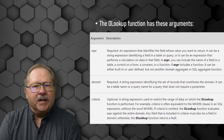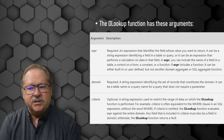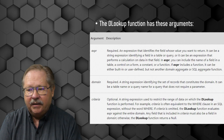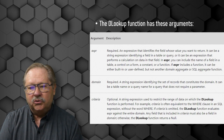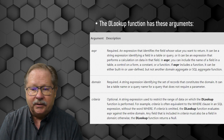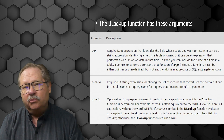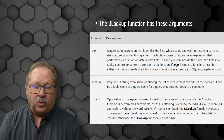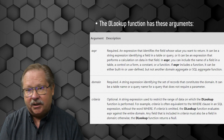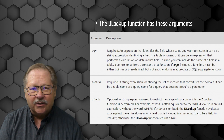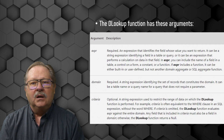The DLOOKUP function has these arguments: it has an expression, which is required, that identifies the field whose value you want to return; the domain, which is the table or query you want to get the data from; and the criteria that allows it to sift down to a single record.